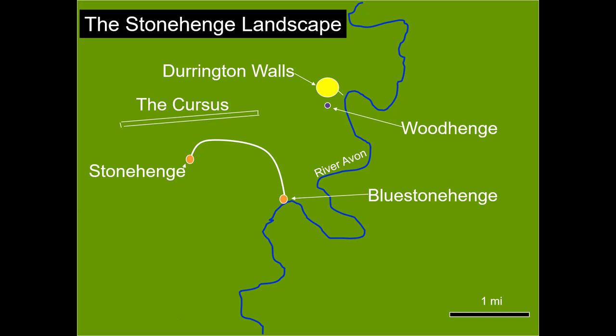Just south of Durrington Walls is a small place called Woodhenge. What people do today, which is different from even ten years ago, is they try to see where Stonehenge fits into the larger landscape — what was its role in society during the time of its construction? That's really one of the biggest shifts in thinking: not only what Stonehenge is as a monument itself, but how it was used by the people who lived in the area.